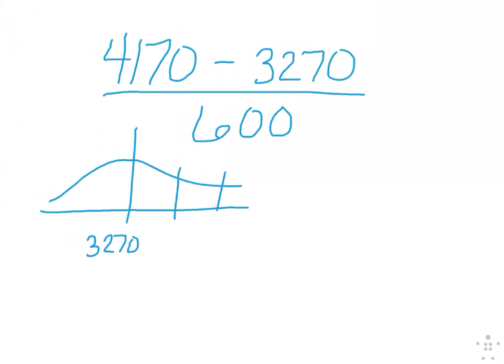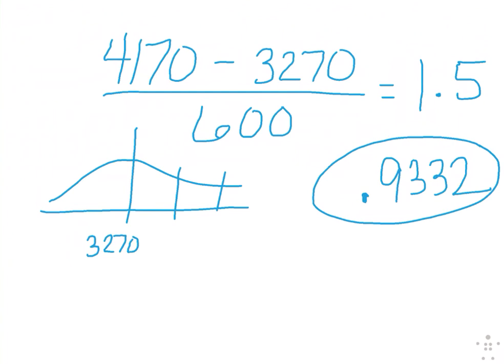So 4,170 minus 3270 divided by 600 was what? 1.5. So now in the table you go down to the row that says positive 1 and you go over to 0.5 and what number spits out? 0.9332. So what they're telling you is 93.3% of babies weigh less than 4,170 grams that's what they're telling you because again here's where the 4,170 would be right in this category and it said less than that so it's finding all those parts over there which is what the table tells you.